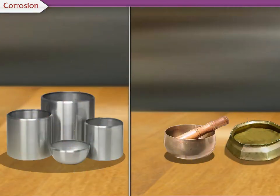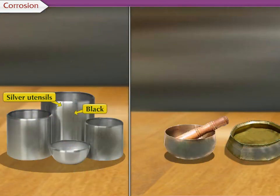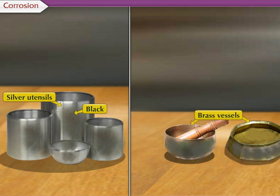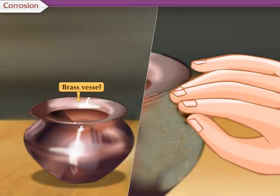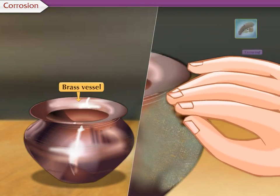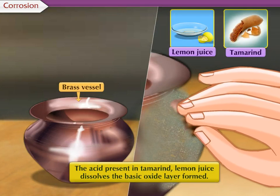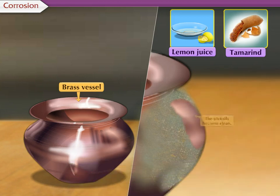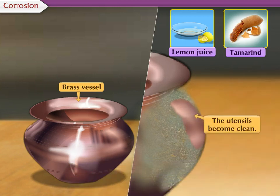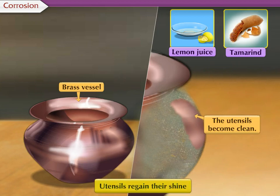In the same way, silver utensils become black while brass vessels become greenish or patinated. If blackened or patinated utensils are rubbed with tamarind or lemon juice, the acid present in them dissolves the basic oxide layer formed and the utensils become clean. They also regain their shine.